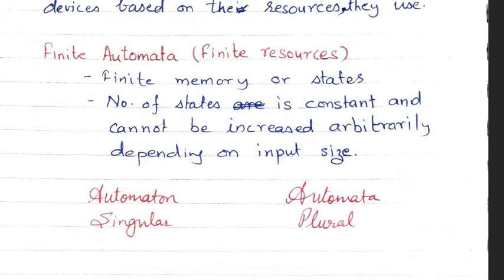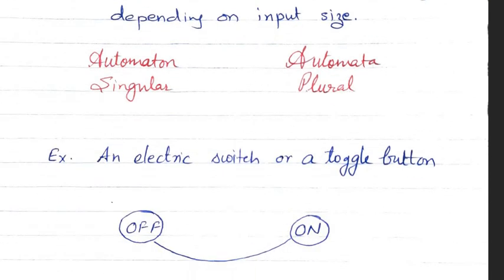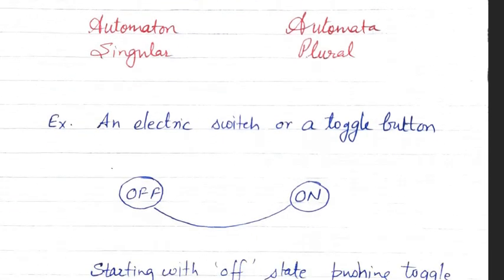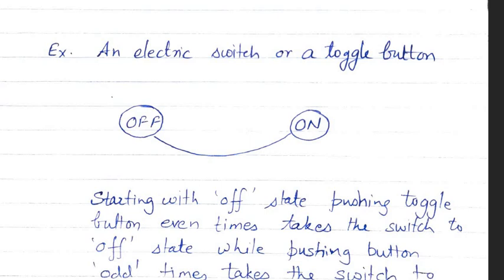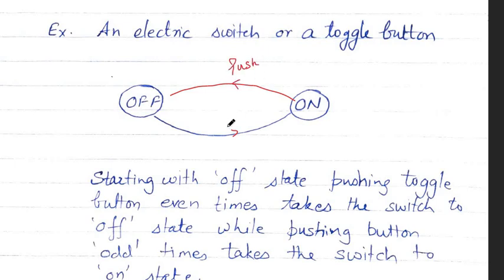We then discussed some examples of finite automata, where we have a finite number of states. We took the example of an electric toggle switch which has two states: off and on. If we push the toggle switch, we move from the off state to the on state, and if we push it again, we return from the on state to the off state.